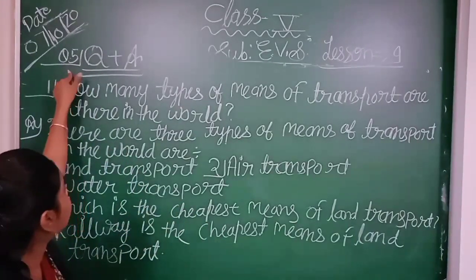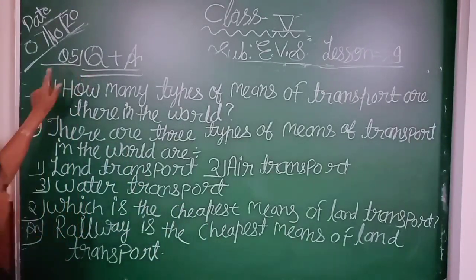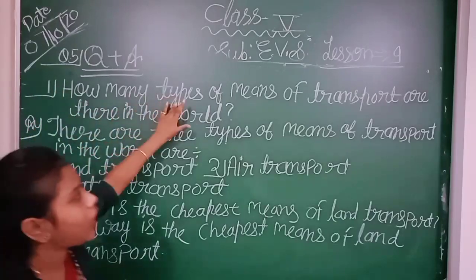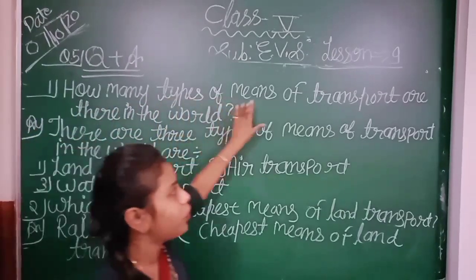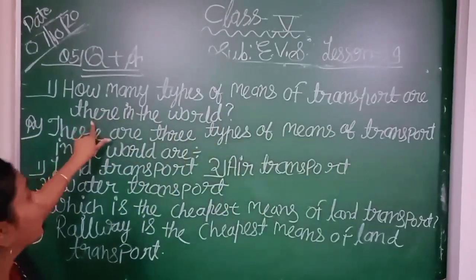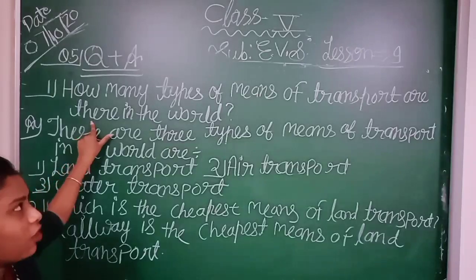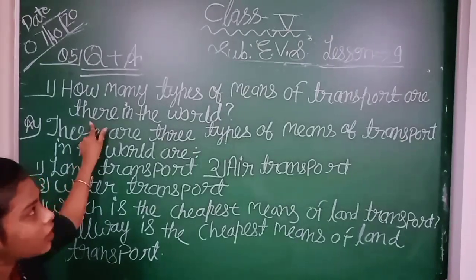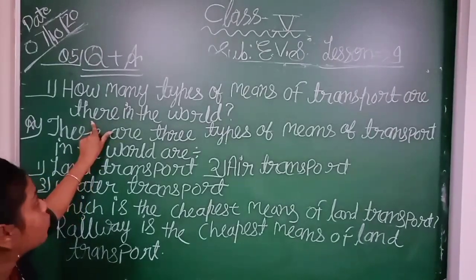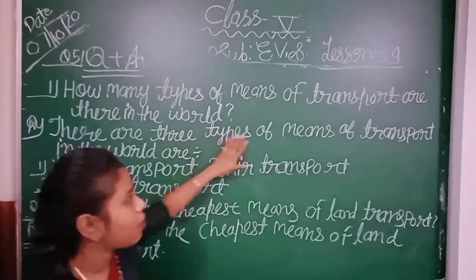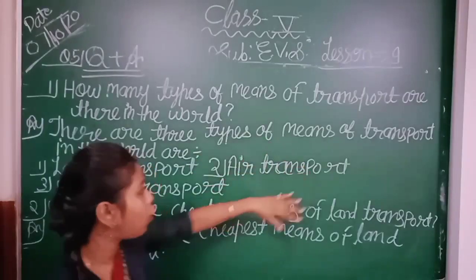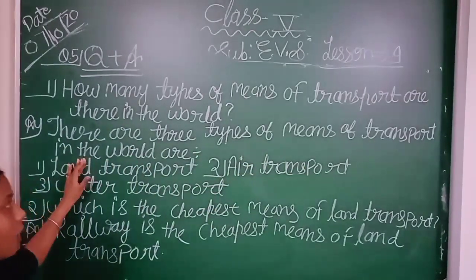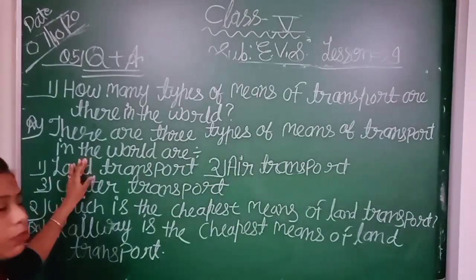I have a question from this book. First question is: How many types of means of transport are there in the world? There are 3 types of means of transport in the world. The most important one is road or cable transport.